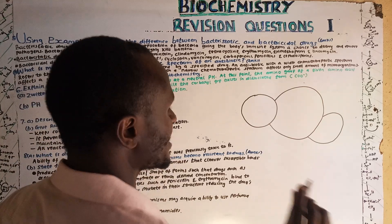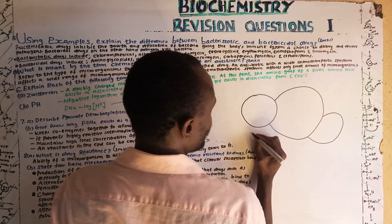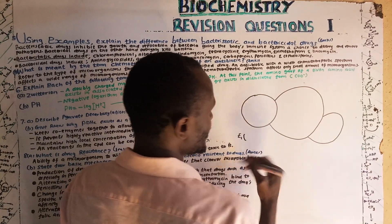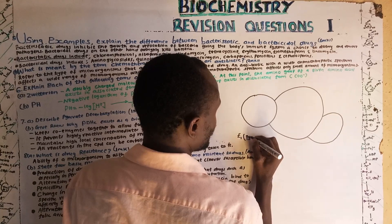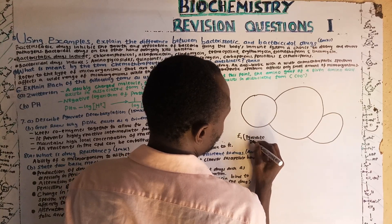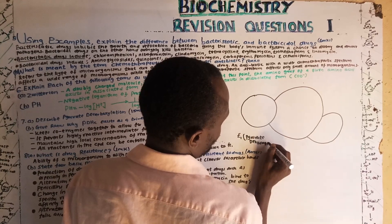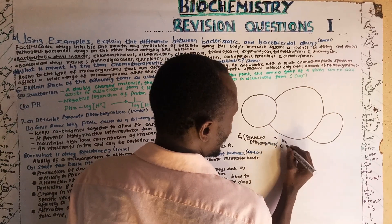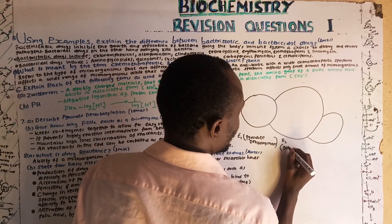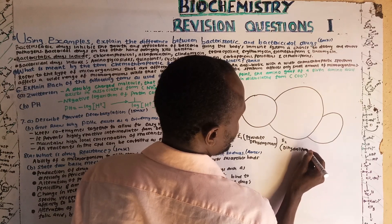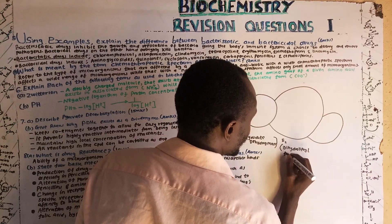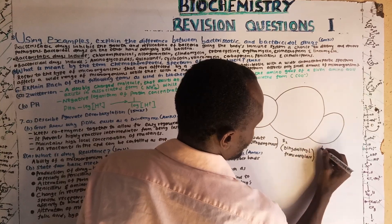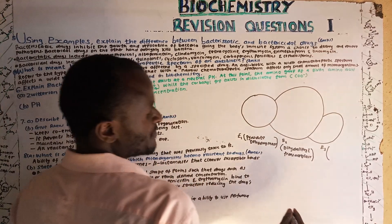Pyruvate dehydrogenase complex is a tri-enzyme found in the inner matrix of the mitochondrion. It is made up of three enzymes: E1, called pyruvate dehydrogenase; E2, called dihydrolipoyl transacetylase; and E3, called dihydrolipoyl dehydrogenase.